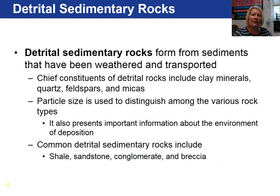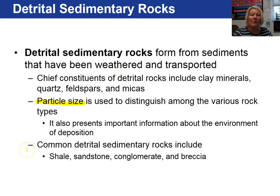The first group of rocks I want to discuss are detrital sedimentary rocks. They form from the breakdown of pre-existing rocks and are composed primarily of clay minerals, quartz, feldspars, and micas. We distinguish between the various detrital sedimentary rocks based on particle size. Examples include shale, sandstone, conglomerate, breccia, and siltstone.